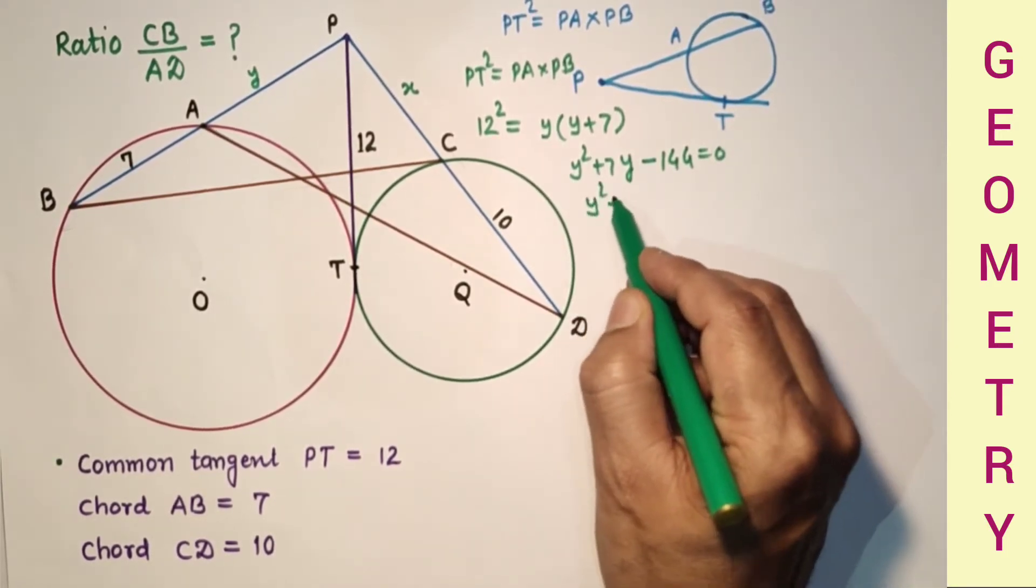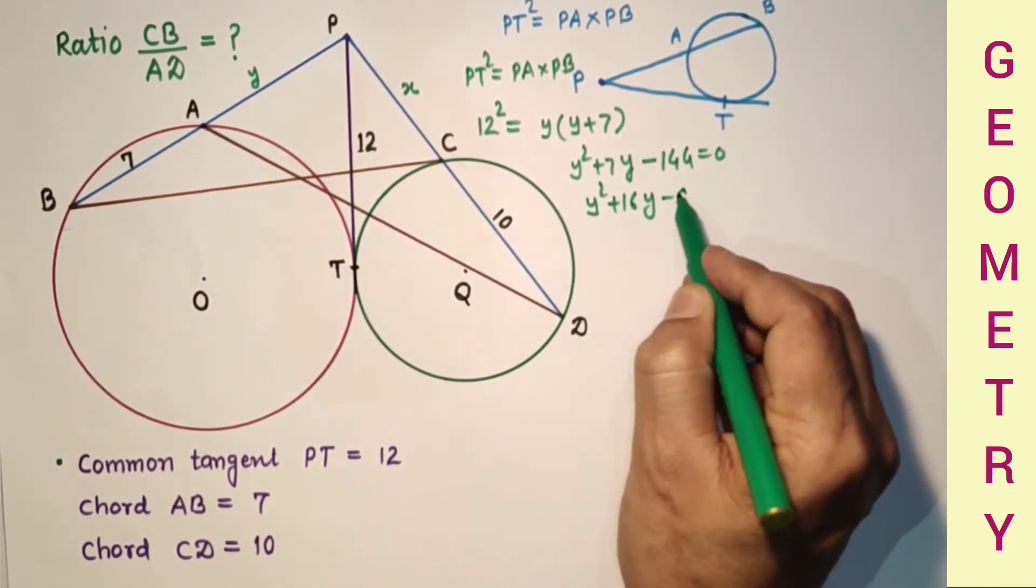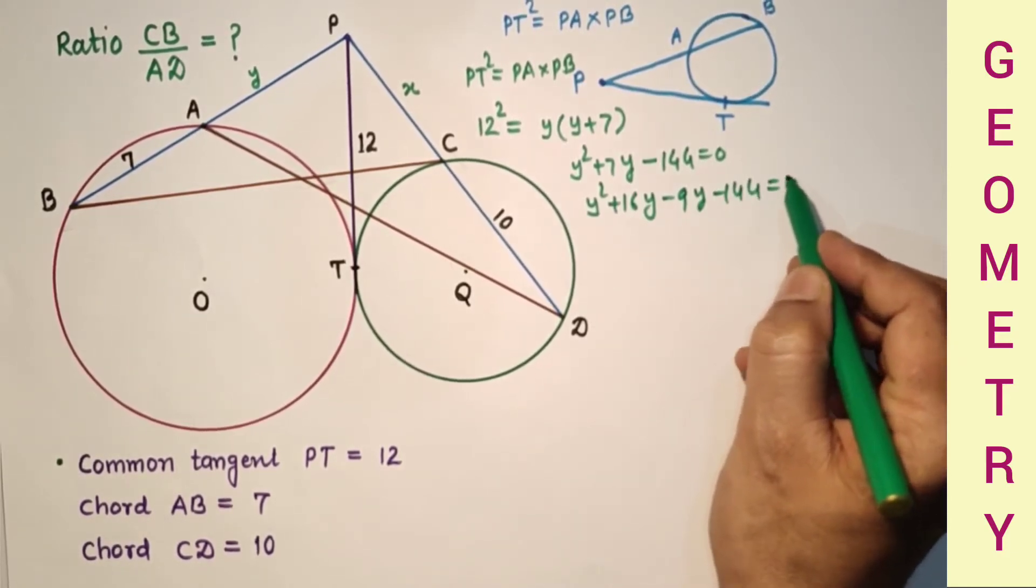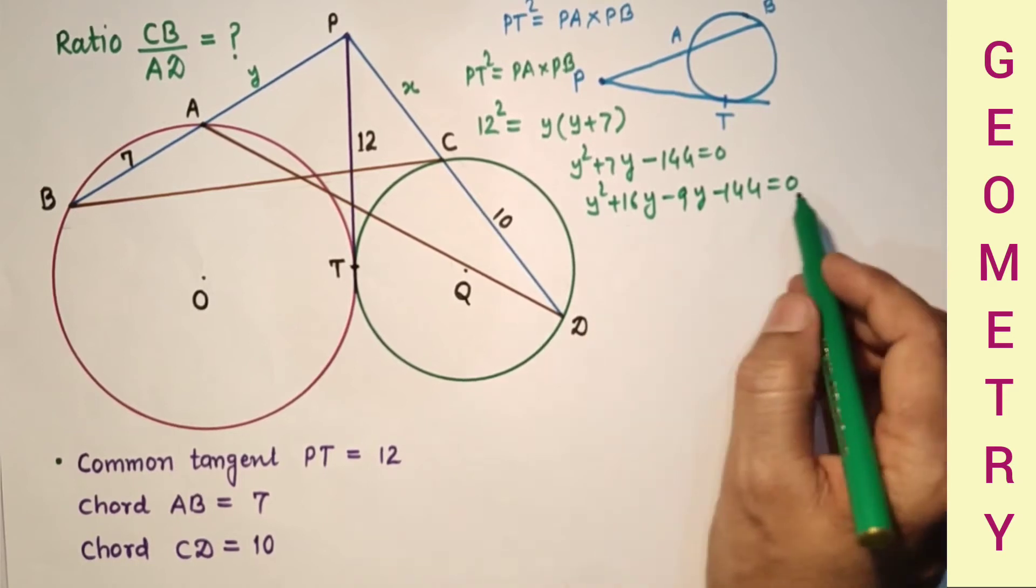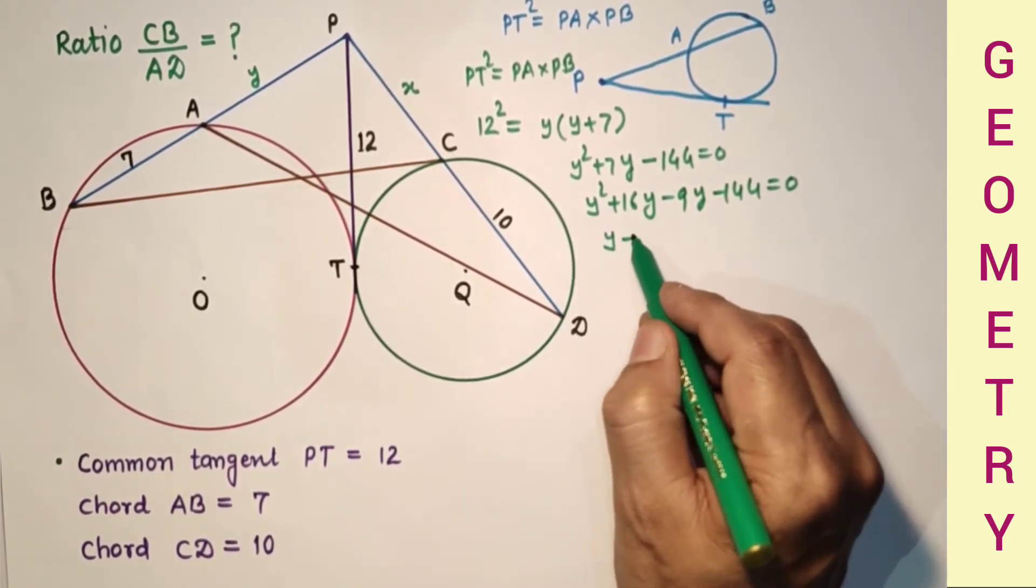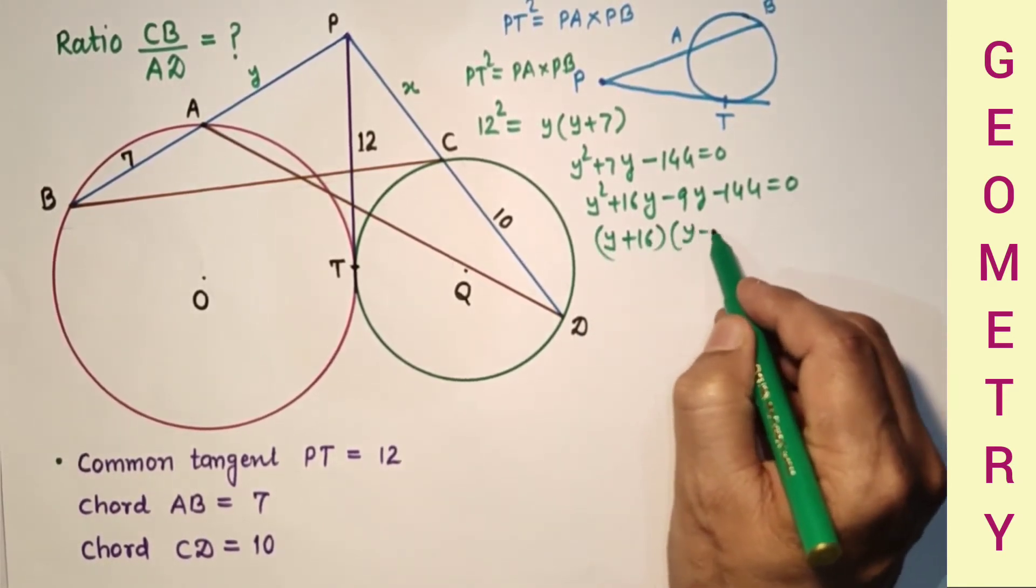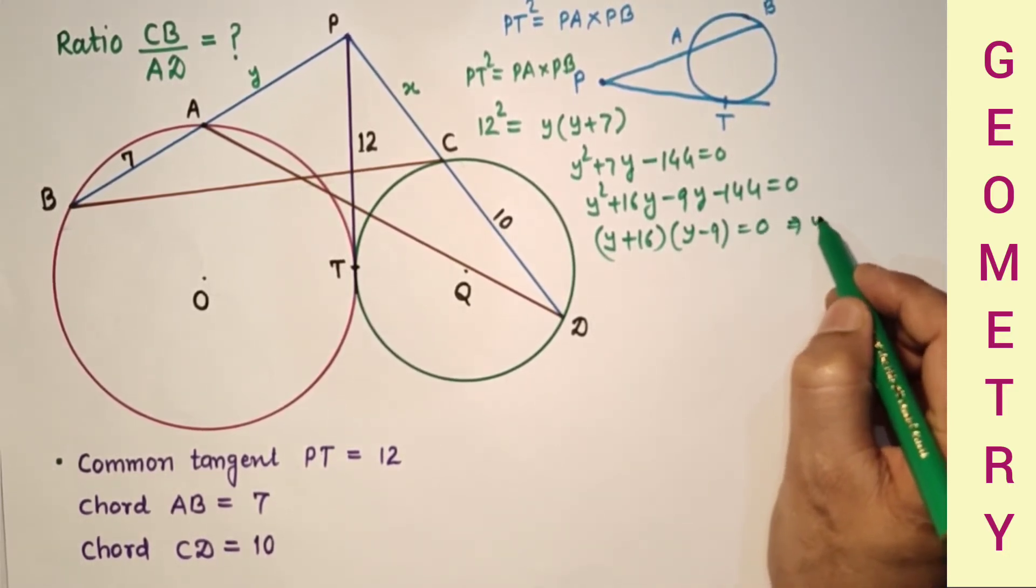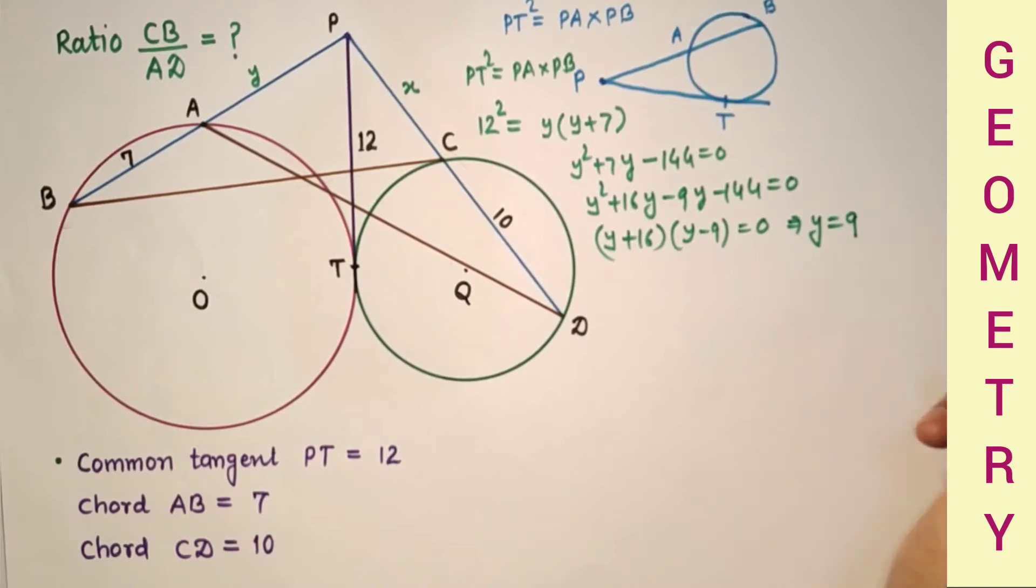So middle term splitting is Y square plus 16Y minus 9Y minus 144 is equal to 0. So factorization Y plus 16 and Y minus 9. So we found Y is equal to 9. Similarly, this PT square is equal to PC into PD.